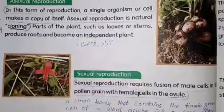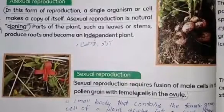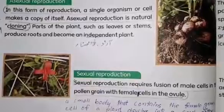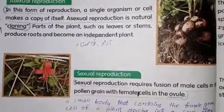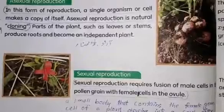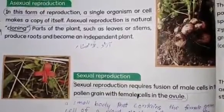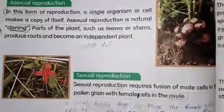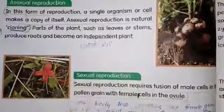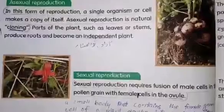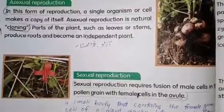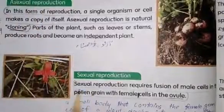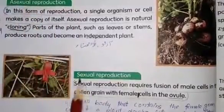You already know very well that reproduction is the process of generating offspring — a process in which new offspring or new individuals are produced. Today we are going to study about the types: how many types are there of reproduction? There are two main types. The first one is sexual reproduction and the second one is asexual reproduction.